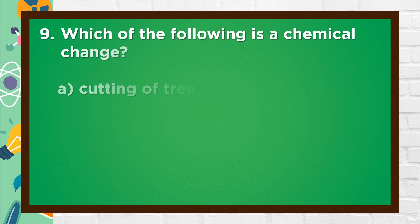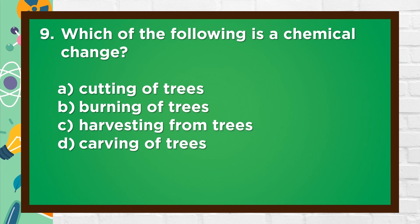Number 9. Which of the following is a chemical change? A. Cutting of trees, B. Burning of trees, C. Harvesting from trees, D. Carving of trees.